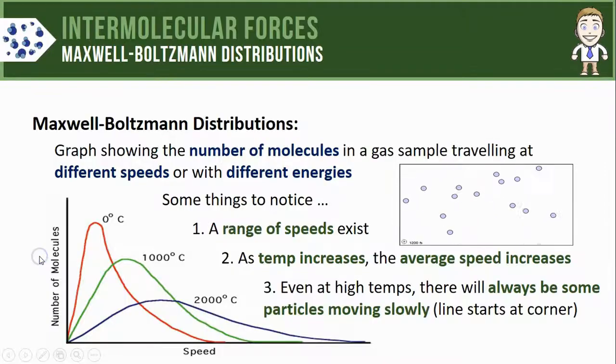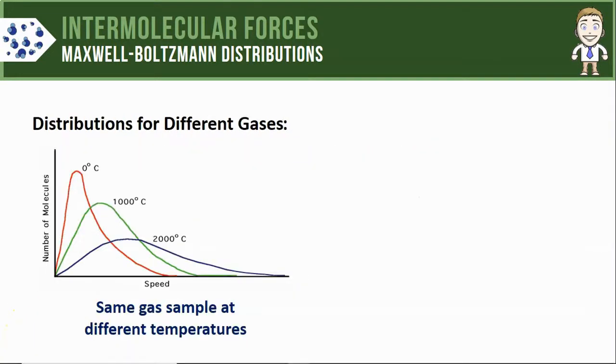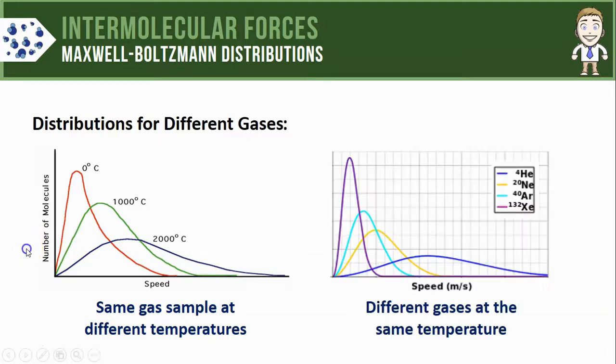Let's close the video by looking at a different type of Maxwell-Boltzmann distribution. The one we just saw was the same gas sample at three different temperatures, but other distribution curves will show different gases at the same temperature, and they're showing very different things even though they look pretty similar.